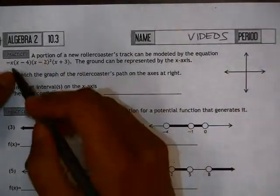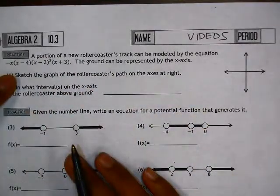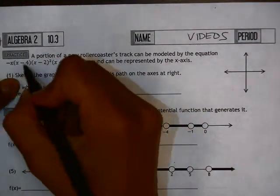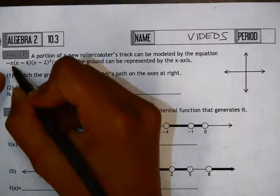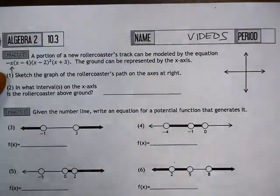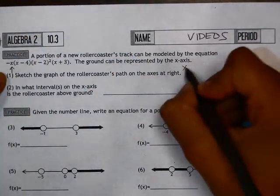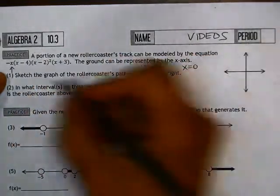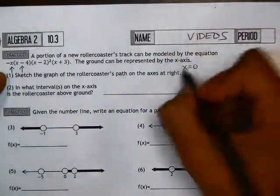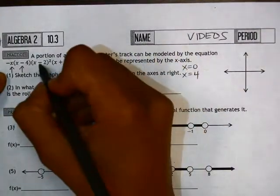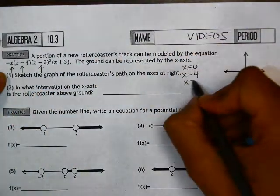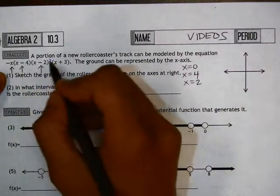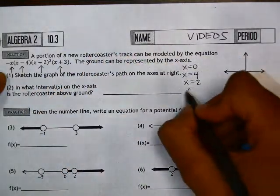The first thing we want to do is write down where the roots of the polynomial are. Each of these factors gives us a root. This gives us a root at x equals 0. This x minus 4 gives us a root at x equals 4. The x minus 2 gives us a root at 2, and x plus 3 gives us a root at negative 3.